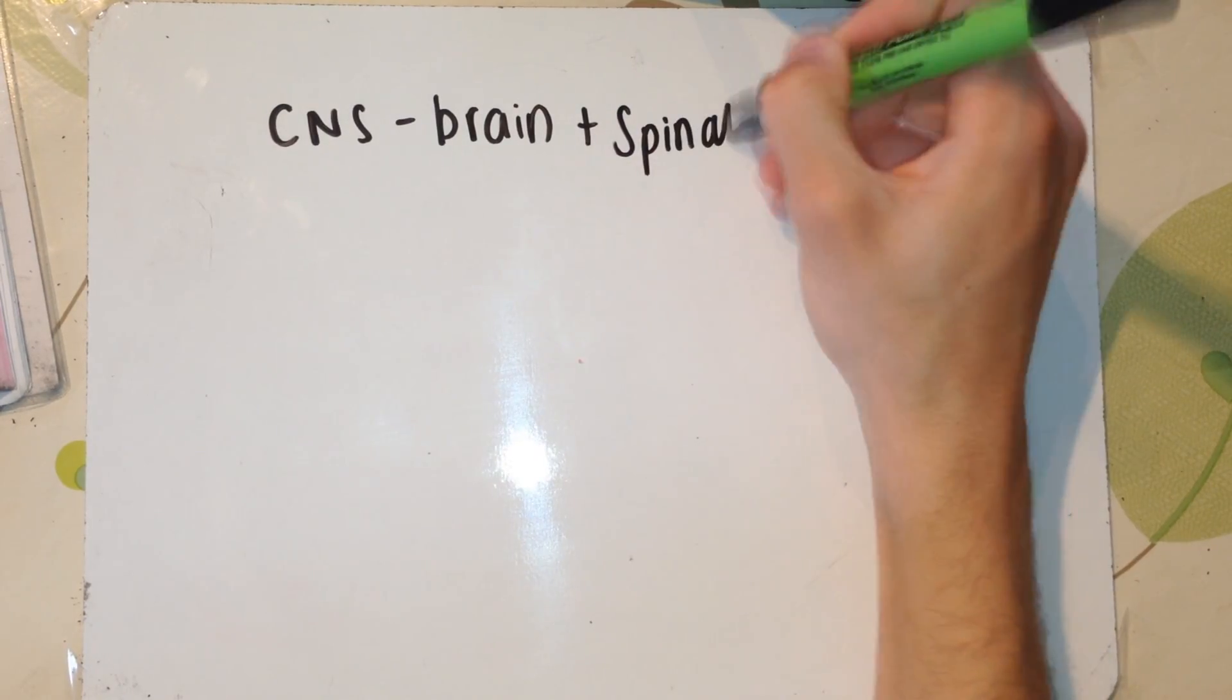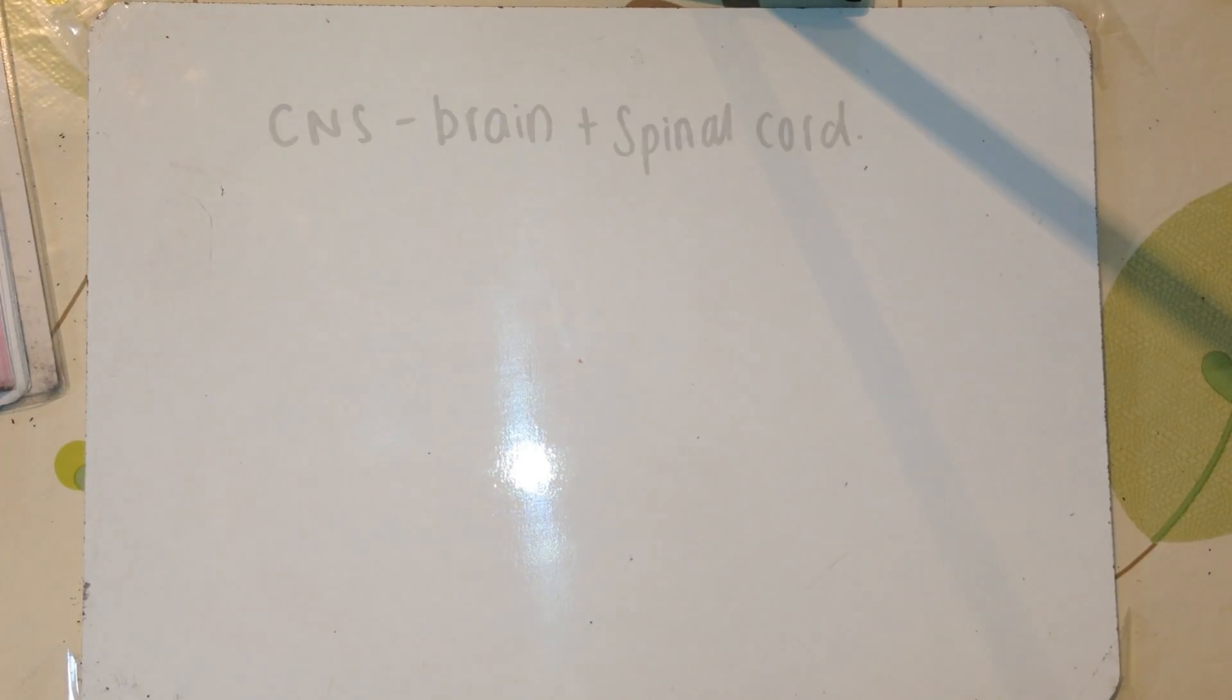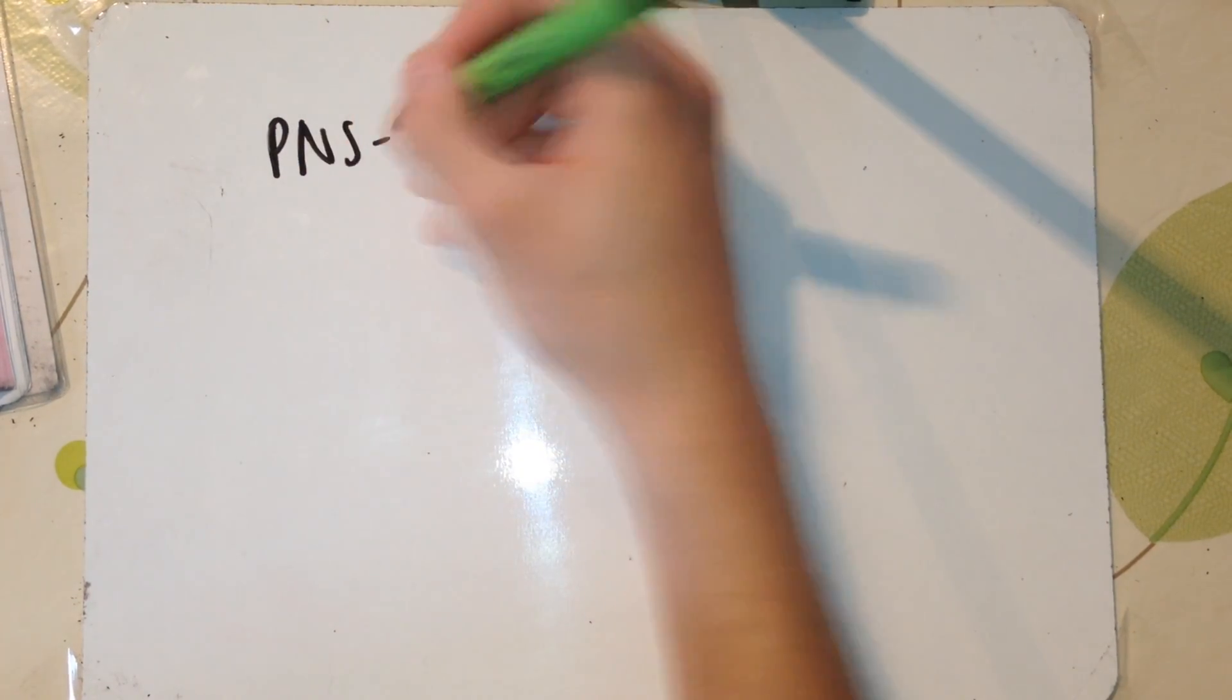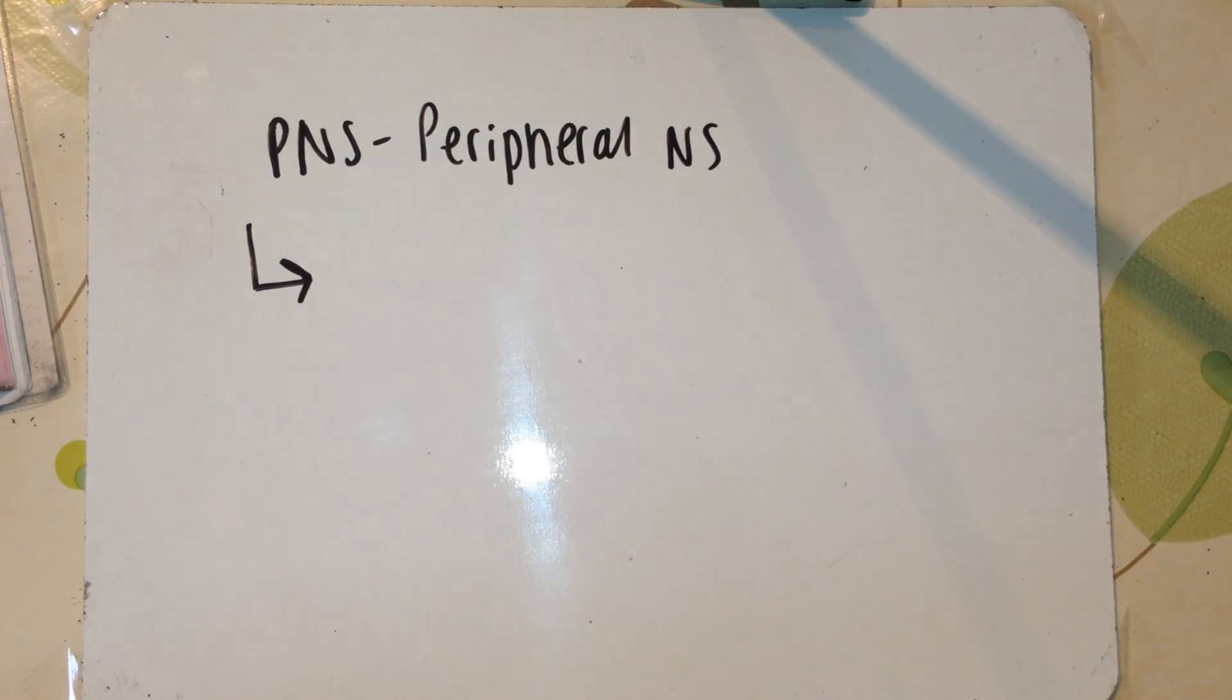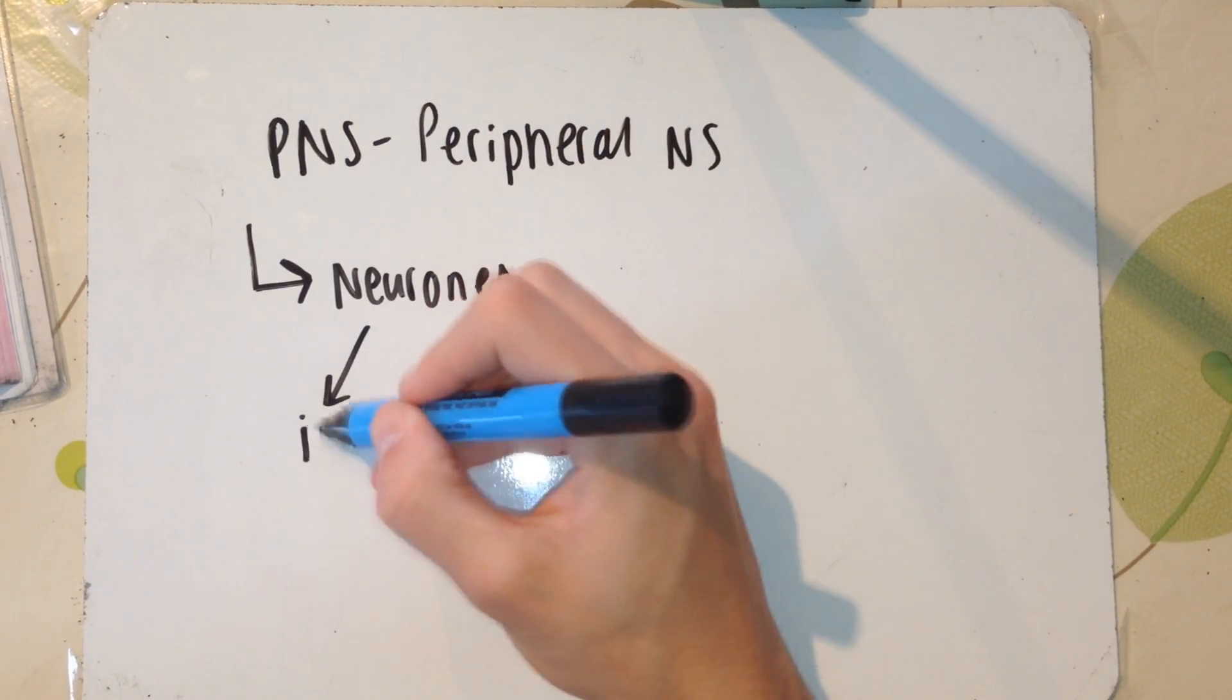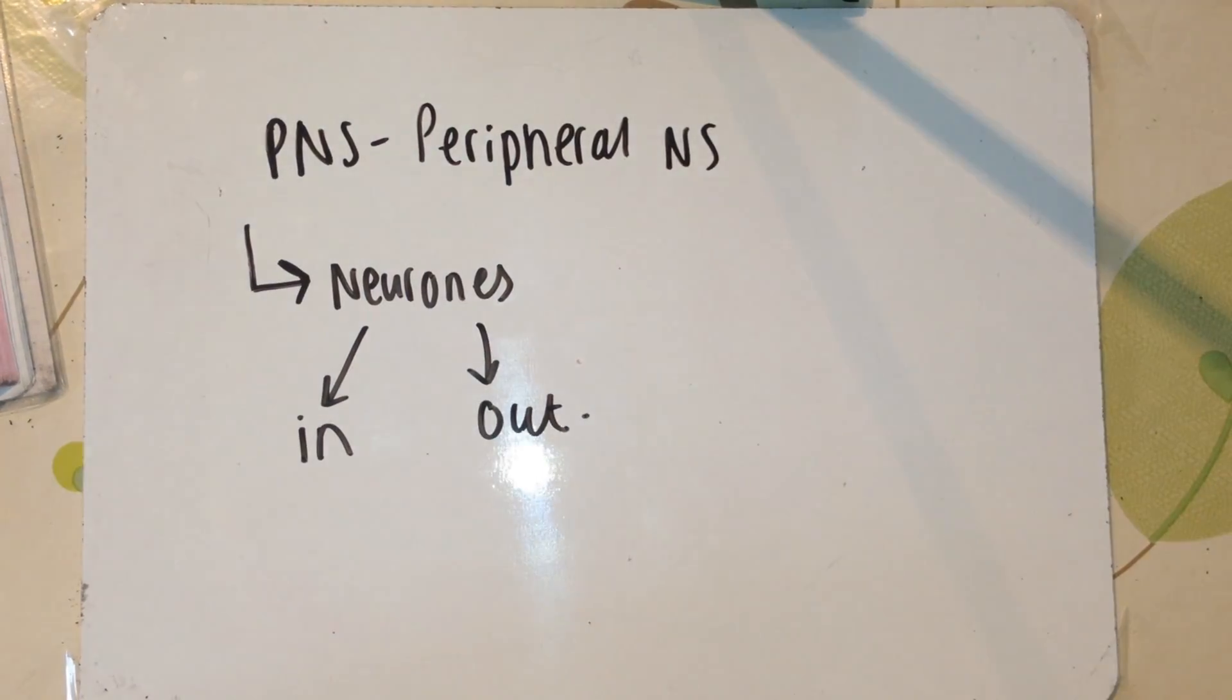The CNS literally consists of the brain and the spinal cord. This stands for our central nervous system. The PNS, on the other hand, is our peripheral nervous system, and this is essentially all of the neurons that go in and out of the CNS.